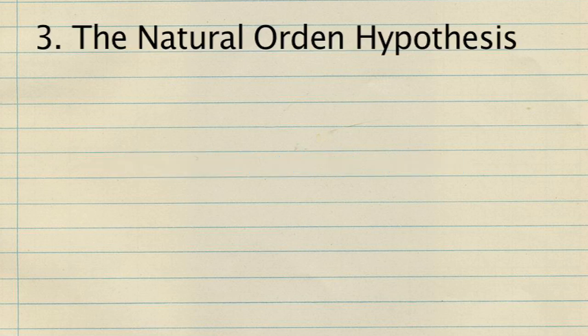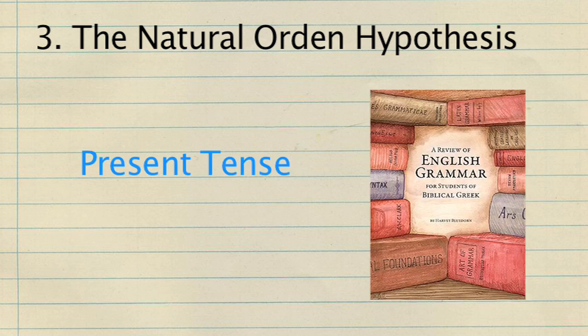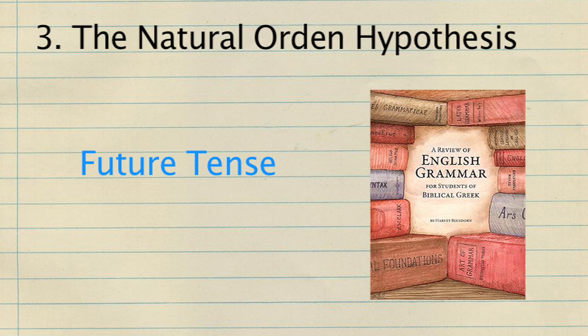The Natural Order Hypothesis: certain grammatical structures are acquired before others. For instance, the present tense is acquired before the past tense.